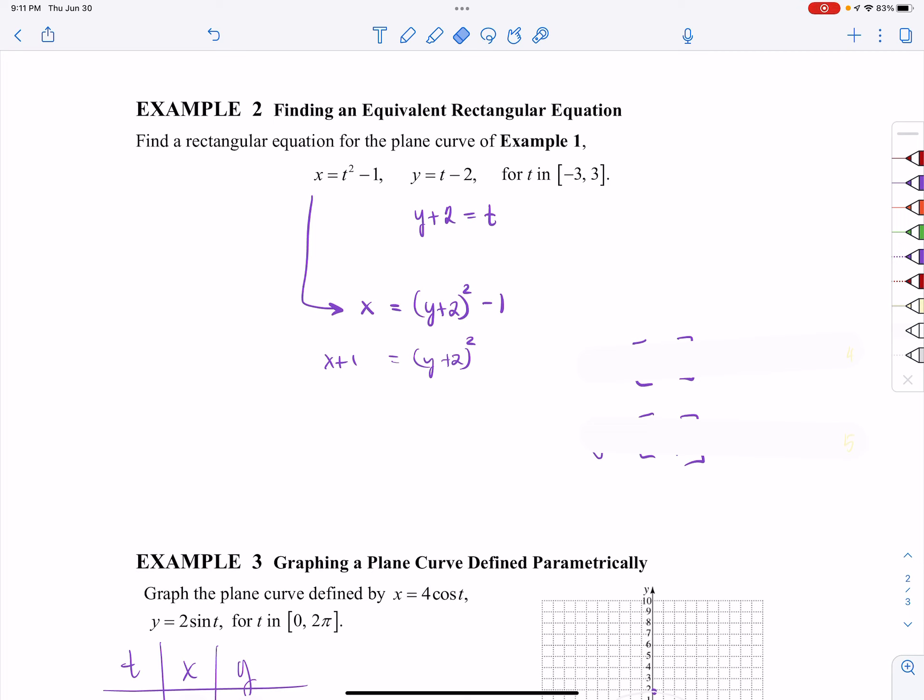And so we would have x plus 1 is equal to y plus 2 quantity squared. In this case, instead of solving for y, I'm just going to leave it like this, because this is the standard form that we worked with back in chapter 10. If you remember the very first chapter that we covered in our course, this is the standard form of that equation.